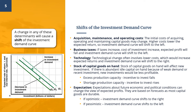Third, technology: technological change often involves lower costs, which would increase expected returns, and thus the investment demand curve will shift to the right. Fourth, stock of capital goods on hand: the stock of capital goods on hand will affect new investment. If there is abundant or idle capital on hand because of weak demand or recent investment, new investments would be less profitable. When there is excess production capacity, the incentive to invest will fall. In contrast, when there is a shortage of production capacity, the incentive to invest will rise.